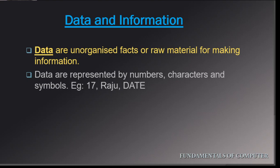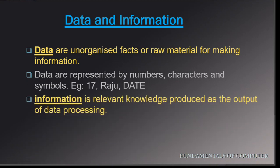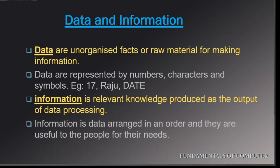For example: 17, Rajoo, date. If you take 17, it is nothing but a number; Rajoo is just a name; date is just a word. If you take these words and numbers individually, they don't convey any specific meaning. Information is relevant knowledge produced as the output of data processing. After performing some process upon data we get information — it is the end product of data processing. Information is data arranged in an order that is useful to people for their needs.